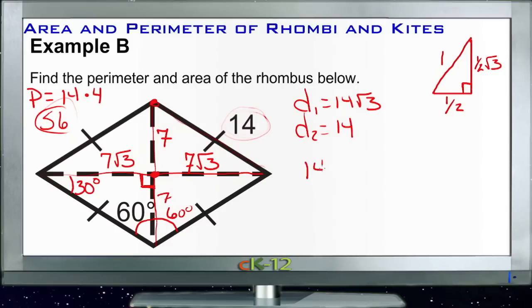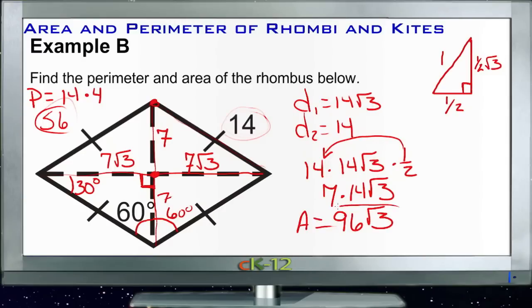So now we have 14 times 14 roots of 3 times one half. So we'll just go ahead and do a half times 14, get that knocked down and take care of those two things at once, so that just leaves us with 7 times 14 roots of 3, and 7 times 14 is 96 roots of 3, so our area is 96 square roots of 3 square units.